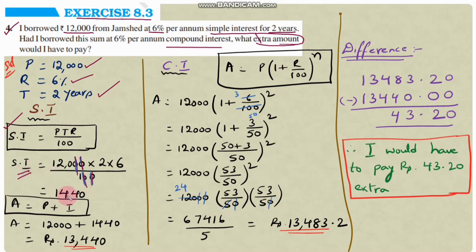Amount under simple interest = Principal + Interest. Principal is 12,000 and interest is 1,440. Adding both: 12,000 + 1,440 = rupees 13,440. So the total amount to be paid under simple interest is rupees 13,440.